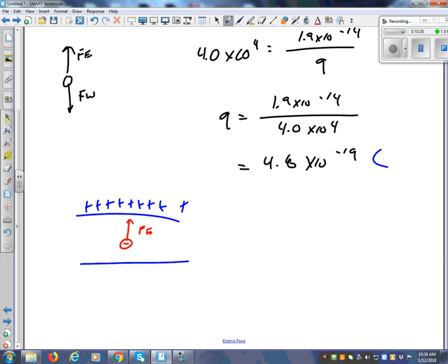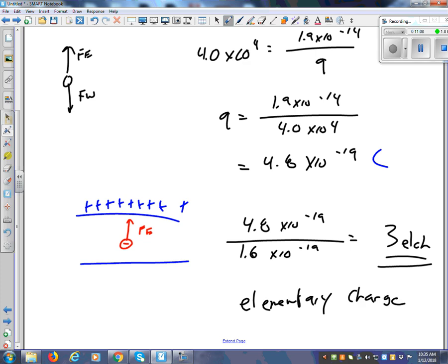4.8 times 10 to the minus 19, how many electrons is that? Well, what's one electron? 1.6 times 10 to the minus 19, right? So two electrons would be two times that, three electrons would be three times that, four times that. So what do I have to do? I have to take my 4.8 times 10 to the minus 19, and I have to divide by 1.6 times 10 to the minus 19, and you're going to get three. Three, and we call this, we have a unit for this, we call it three elches, E-L-C-H, elches. Elches stands for elementary charge, elementary charges, elches.